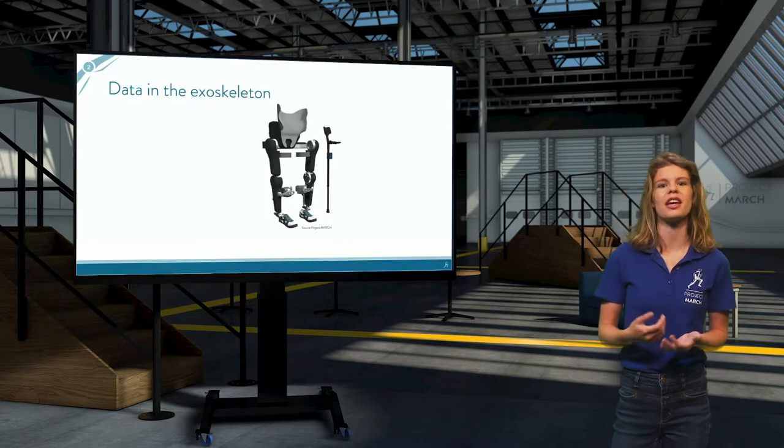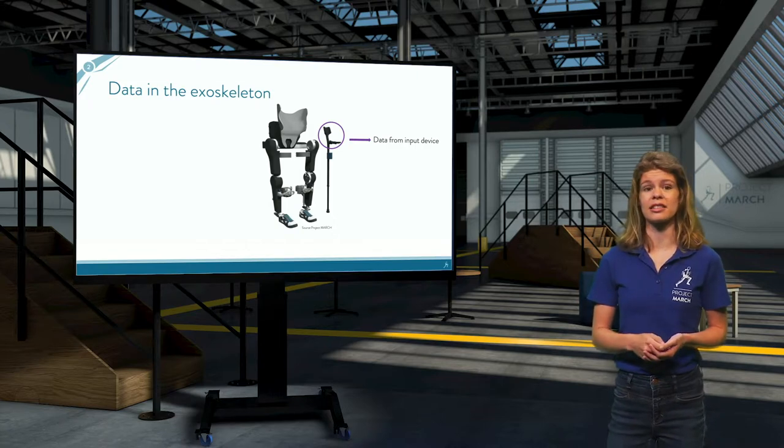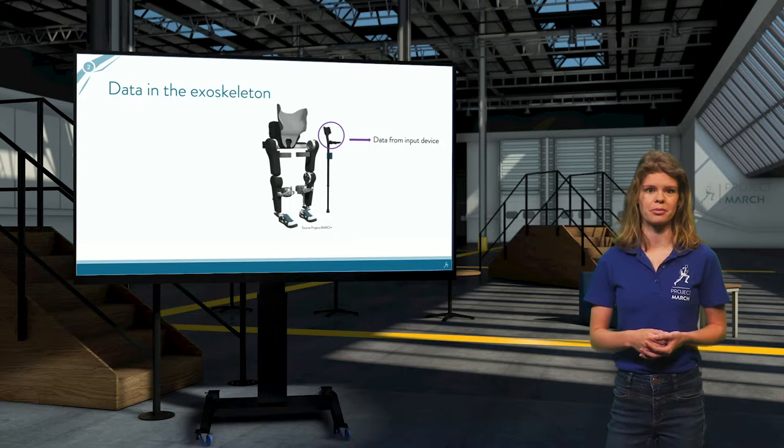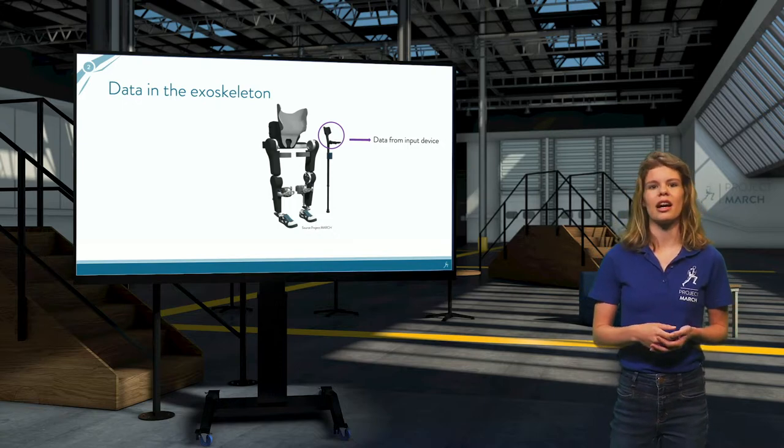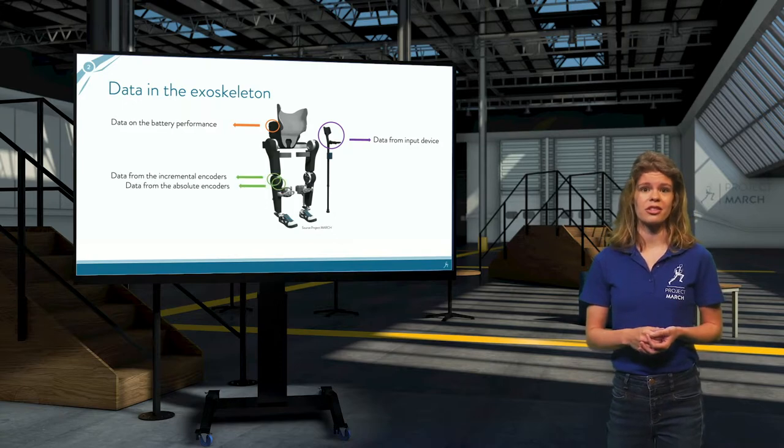So what kind of data is there in the exoskeleton? Well, there's the data which comes from the input device, as this is where the pilot selects their gate. Then there are the sensors and encoders, which we've covered in the reading material. This is where the data on battery performance, joint angles, and temperature of the joints comes from.